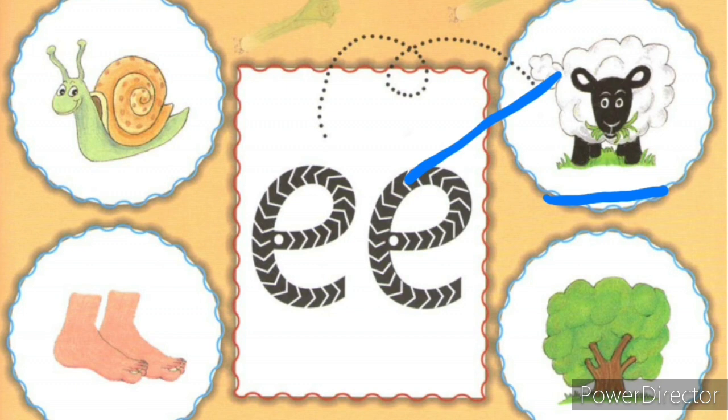Look at the next picture children. It's a tree. Can you hear the 'ee' sound in the word 'tree'? Yes, we do. So we have to match 'tree' to 'ee'.